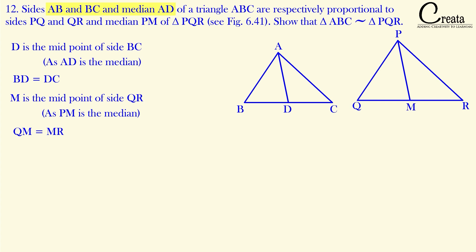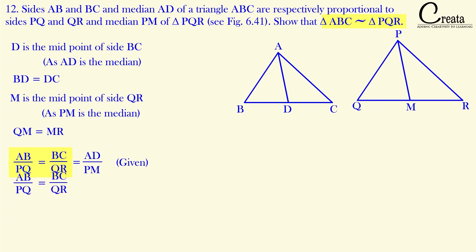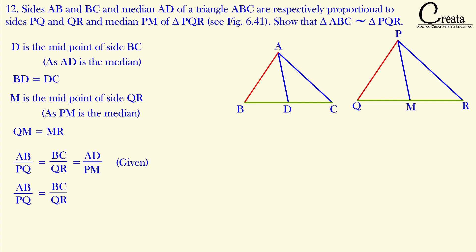It is also given that sides AB, BC, and median AD are proportional to sides PQ, QR, and median PM — that is, AB upon PQ equals BC upon QR equals AD upon PM. We have to prove triangles ABC and PQR similar. The first two parts of the given equation mean the ratio of two corresponding sides are equal. Either we prove the third corresponding side ratio equal, or we prove the in-between angle to both corresponding sides equal — that is, if we prove angle B equals angle Q, by SAS criteria both triangles are similar. So we will try to prove angle B equals angle Q.